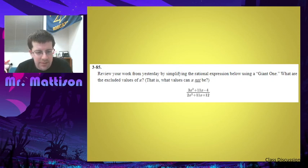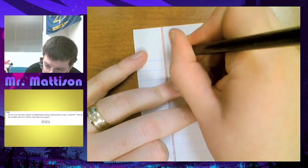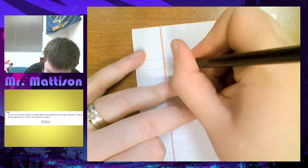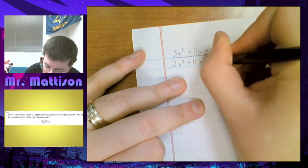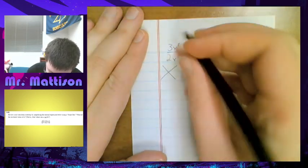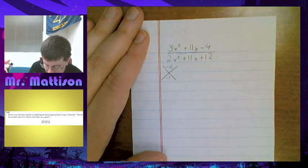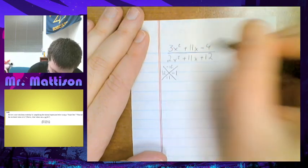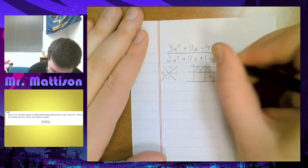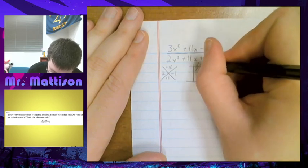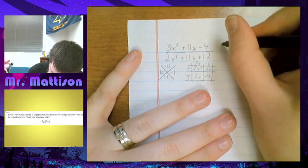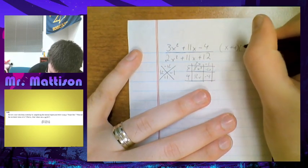Let me switch over my document camera. So this one we had 3x squared plus 11x minus 4 over 2x squared plus 11x plus 12. You can factor in whatever process you prefer. I do this little X, and I say 3 times negative 4 is negative 12. It multiplies to be negative 12 and adds to be 11 — that's going to be 12 and negative 1. Drawing out my box, I get 3x squared, negative 4, 12x, negative 1x. I can pull out a 3x and a negative 1, and here a x and a 4. So the top factors into x plus 4 and 3x minus 1.